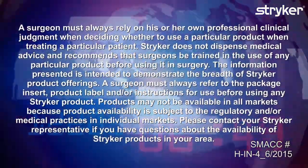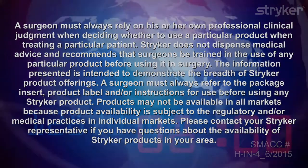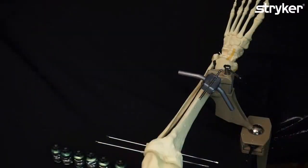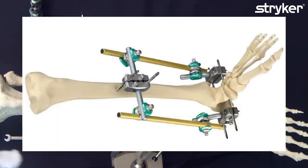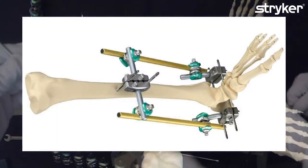Welcome to another edition of our Hoffman 3 knowledge series. We're going to show an ankle frame. This time we are going to use, instead of one transfixing pin, a double construct.